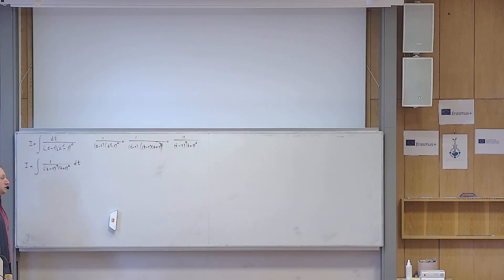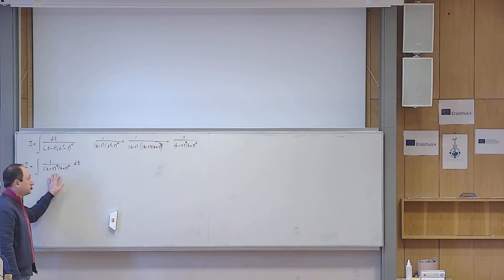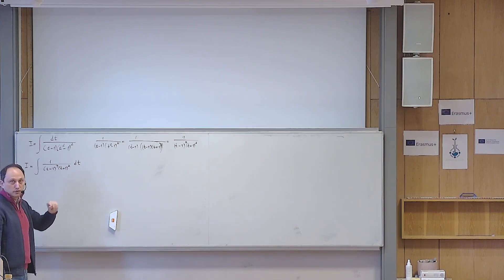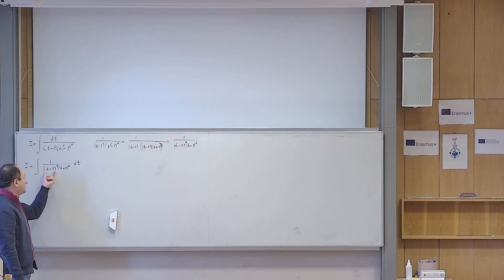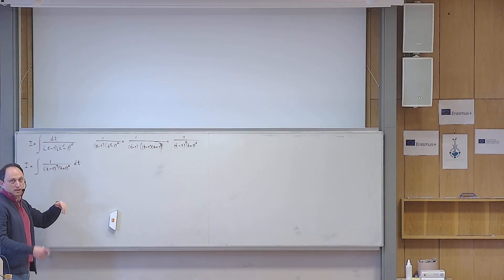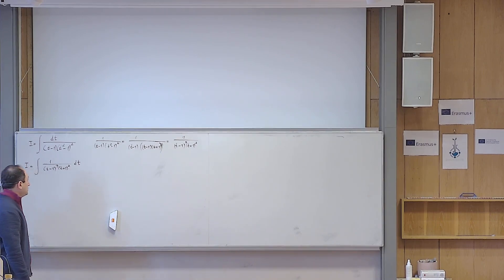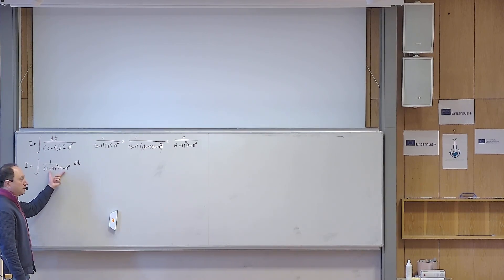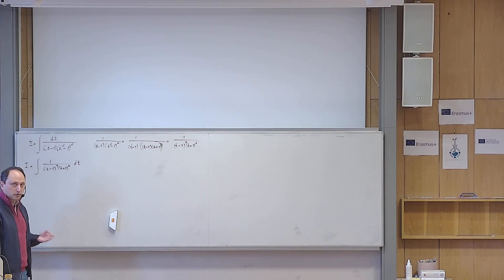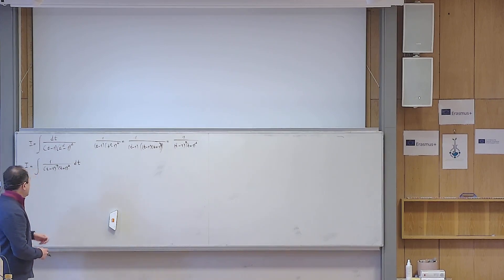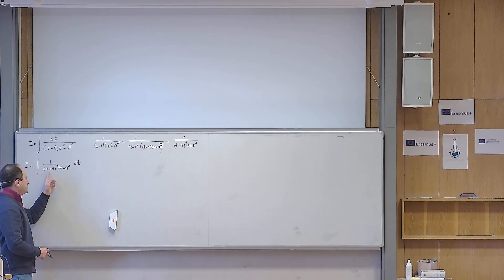In principle everything is now ready to start the method of partial fractions, but the algebra becomes more involved if I start right away, because I would need to raise these polynomials to powers 3 and 2 and multiply them. So in order to avoid that, I want to use substitution to reduce this integral to one that is simpler algebraically. And since raising to power 3 is harder than raising to power 2, I want to eliminate the cubic factor.